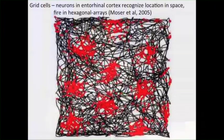Grid cells were discovered by Moser et al. in Scandinavia a few years ago. They're kind of like place cells in the hippocampus, except they're in the entorhinal cortex. The experiment involves implanting electrodes in the entorhinal cortex of freely moving rats as they move around a square space. What you see in red is a particular neuron firing at a particular geometric place in the grid. When the animal gets to that point, the neuron fires; the animal moves again and that same neuron fires. When you plot where that neuron fires, you get this hexagonal grid.